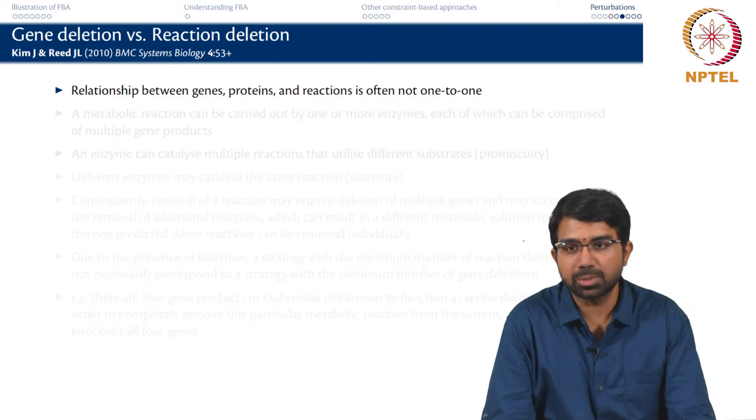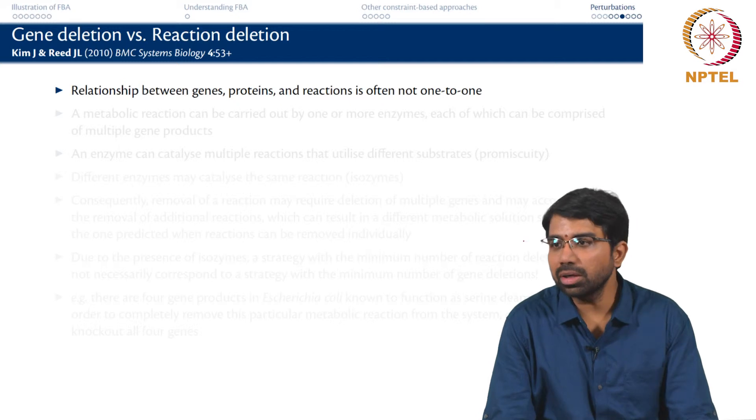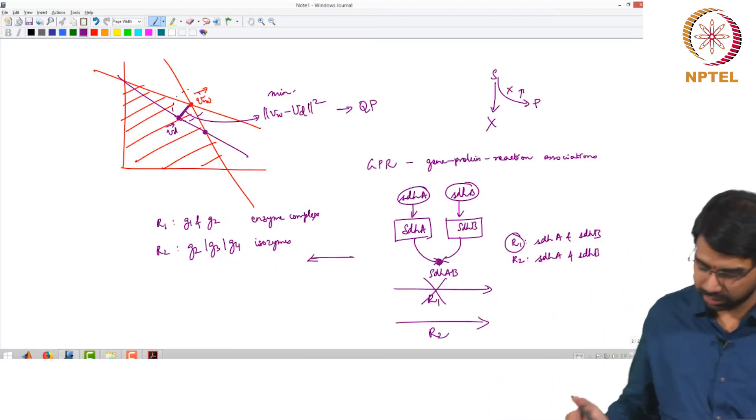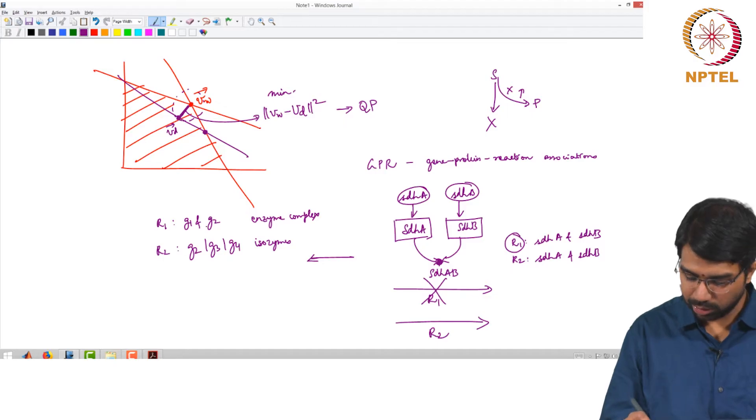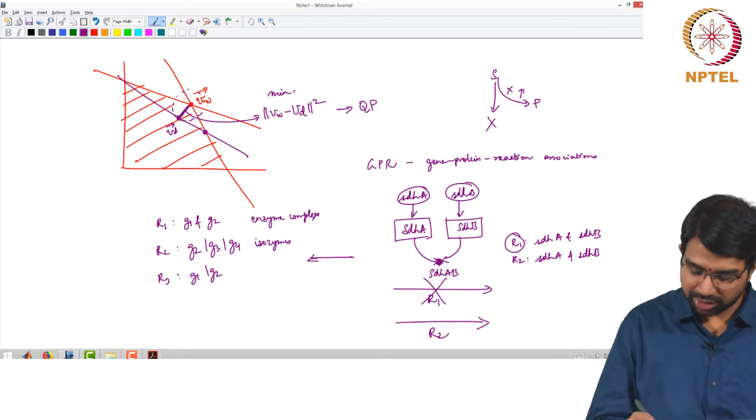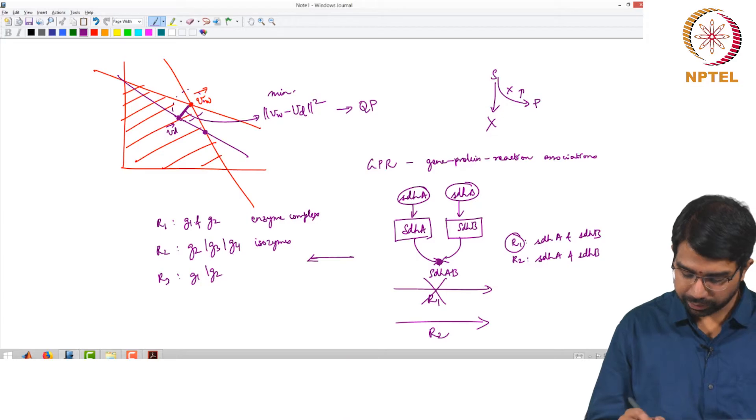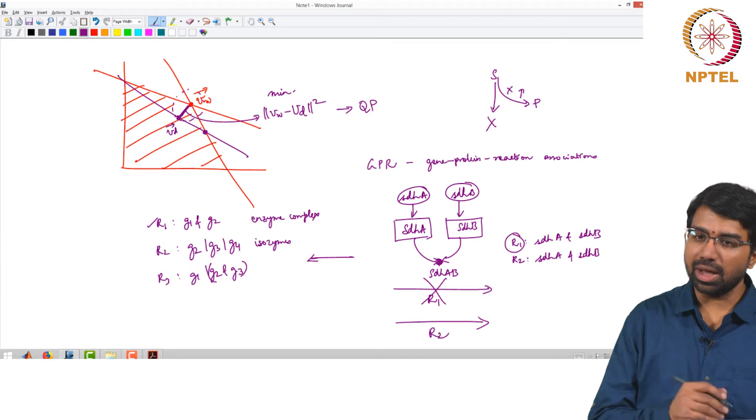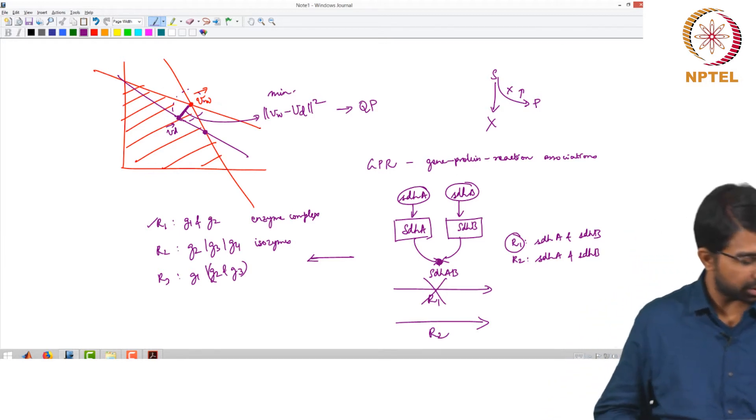It is also possible to delete reactions but you have to be careful because of these complex gene-protein-reaction relationships. This relationship between genes, proteins and reactions is often not one to one. It can be even more complex. You can have another R3 which is G1 or G2. When you touch G1 or when you touch G2 here, all these reactions are going to change. You will have to see what is the effect on all the reactions where G2 is involved. You can have very complex gene-protein-reaction associations.